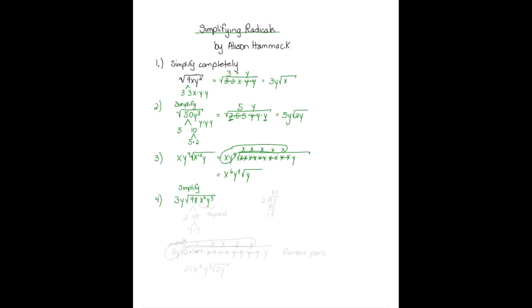Our fourth problem: three y times the square root of 98 x to the fourth y to the fifth. The first thing I want to do is break 98 into its factor tree. I'm not sure right off what divides into 98, but because it ends in eight it's an even number, so two will divide into it. 98 divided by two gives us 49. So we have two times 49, and 49 we can break into seven times seven.